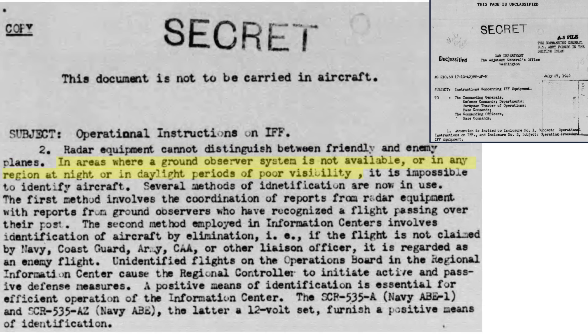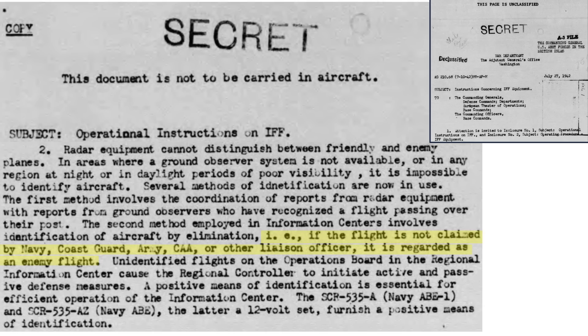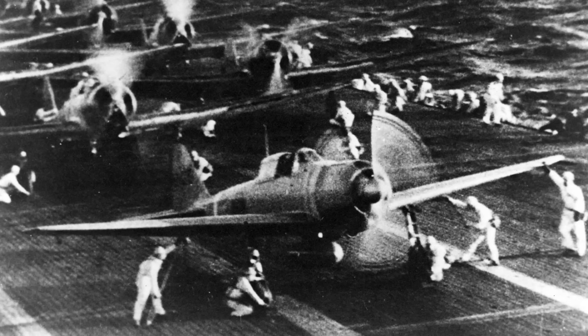Aircraft identification is not possible at night or in poor visibility conditions. Several methods were used for aircraft identification prior to the IFF system, including coordination of radar returns with ground observers, coordination with information centers' planned flight routes, and through the process of elimination of possibilities. This is what occurred during the Pearl Harbor attack.